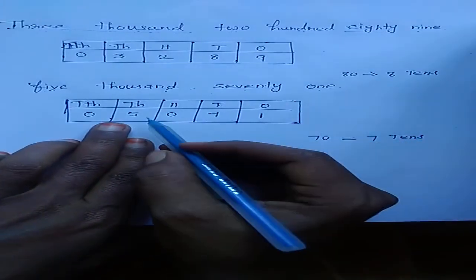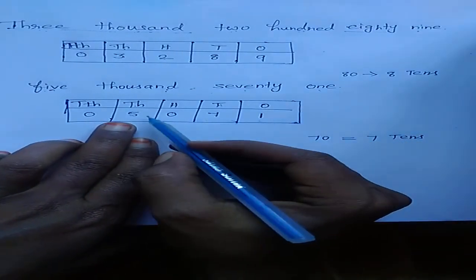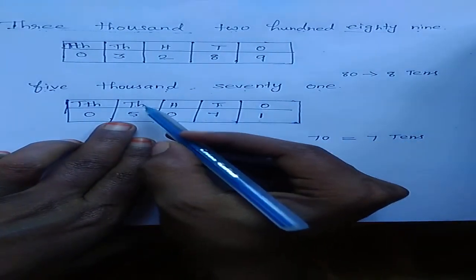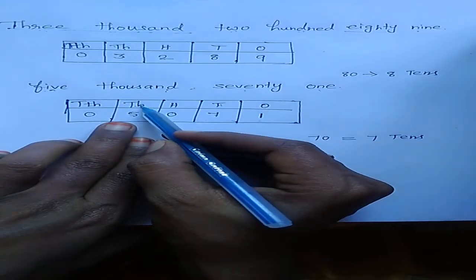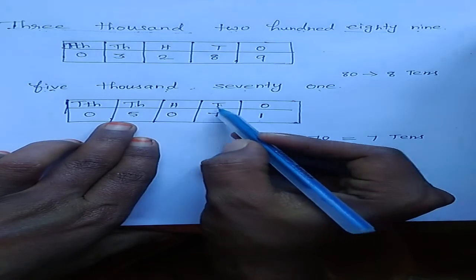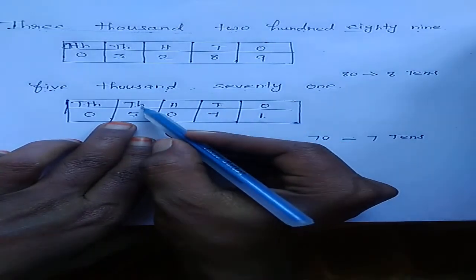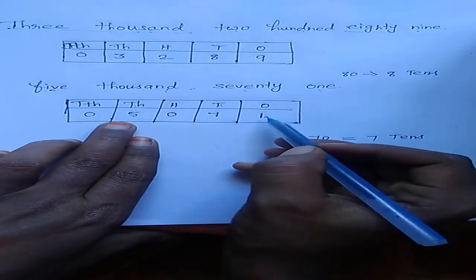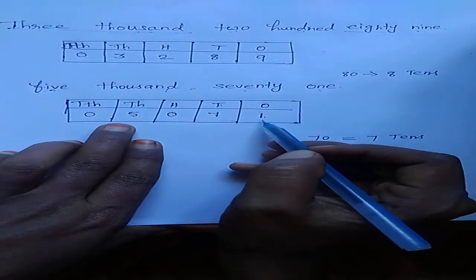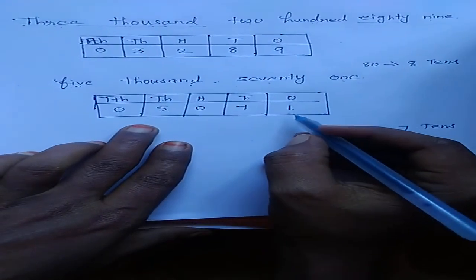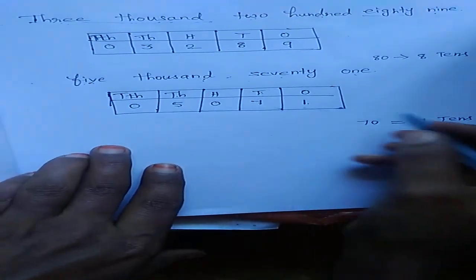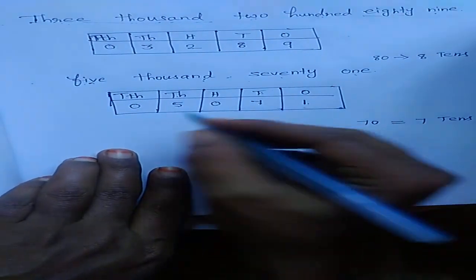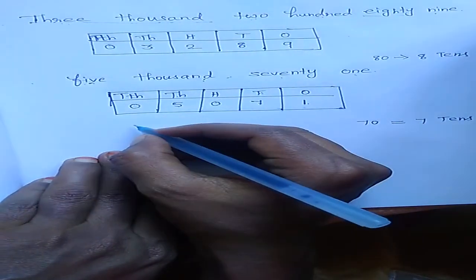Now read the number: five thousand seventy-one. Five thousand seventy-one. Did you understand, children? Yes. Very good.